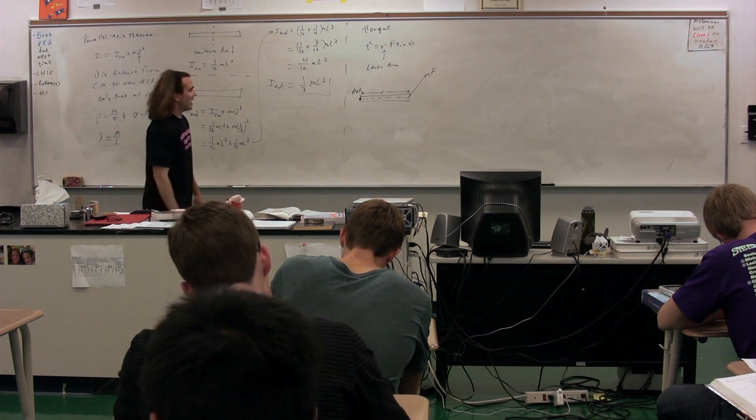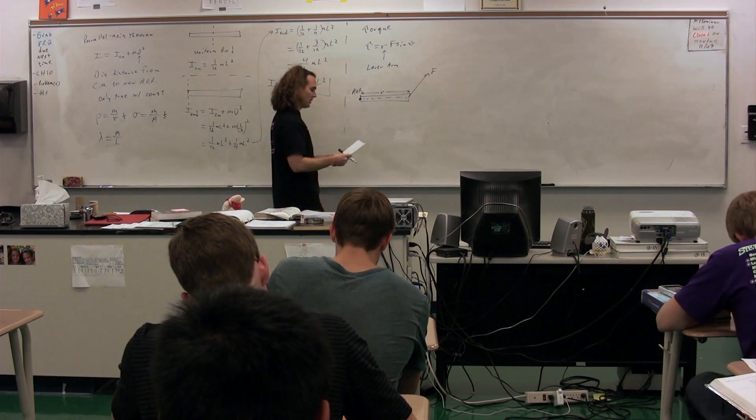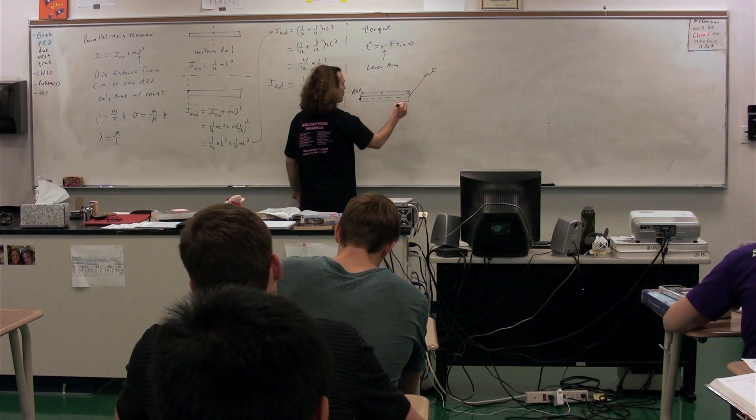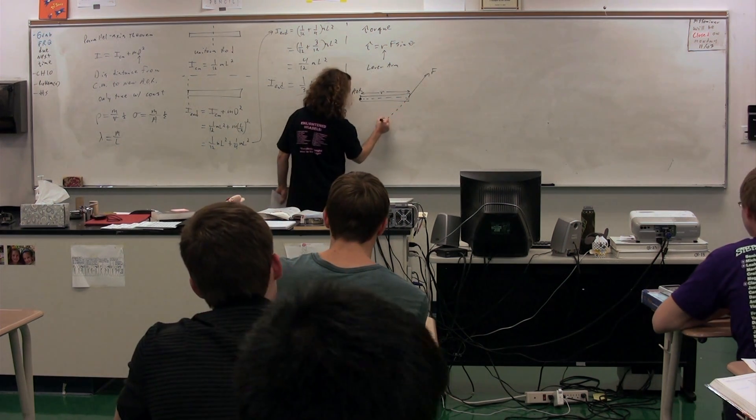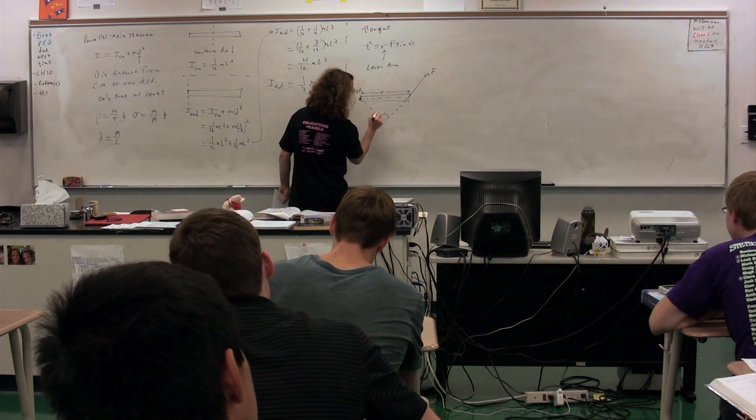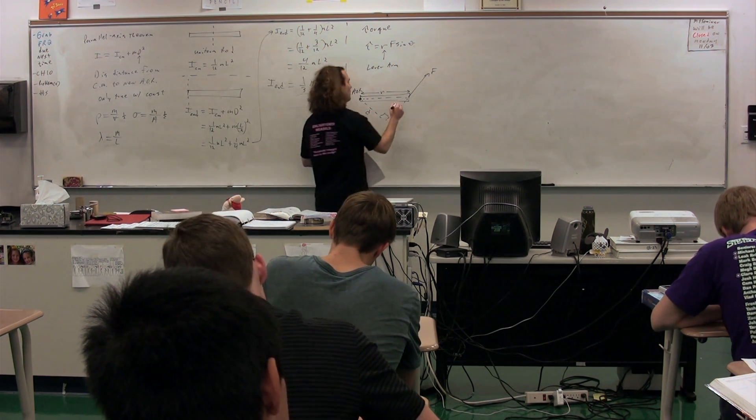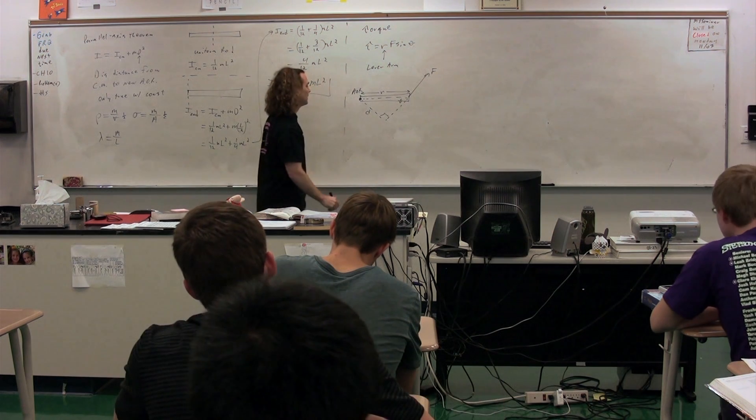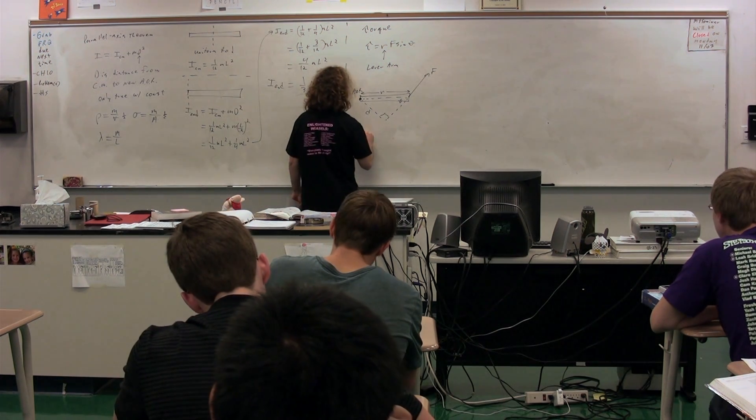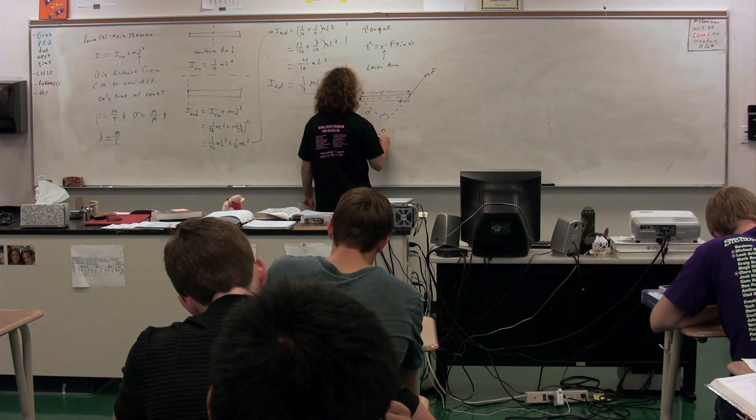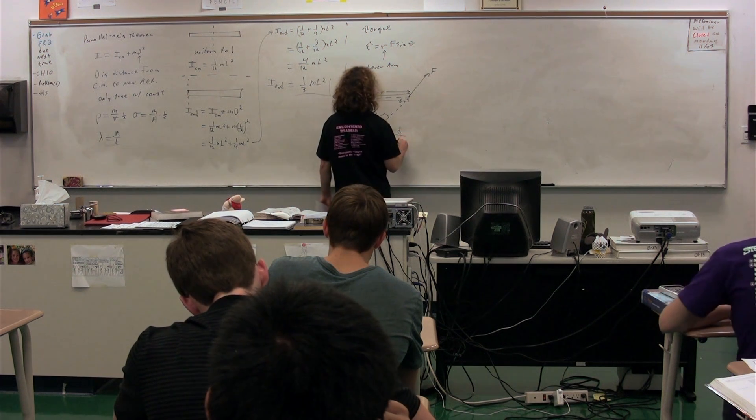Now, in your text, they also refer to something called the effective moment arm, which they call D, or this right here. This is theta, and you can see that sine of theta equals opposite over hypotenuse, or D over R.